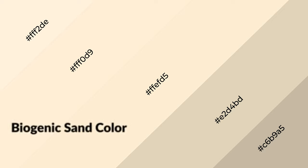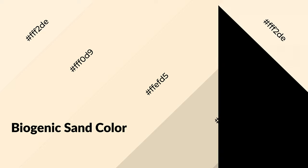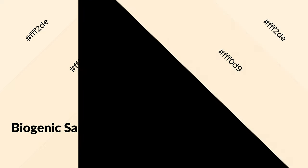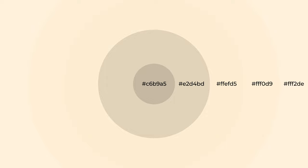Biogenic sand is a warm color and it emits cozier and active emotions. Warm colors are symbols of warmth, fire, heat, and sunshine. It also evokes joy, passion, love, and even anger. You can see them used in restaurants and gyms.